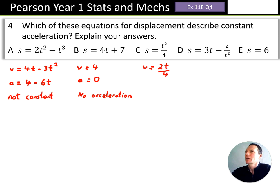Well, differentiating once to get velocity, and we get 2t over 4. Differentiating a second time, and we get 2 over 4, or simplifying, that's just a half.